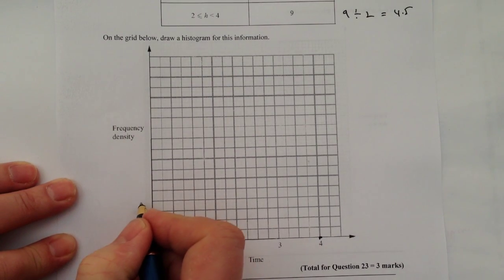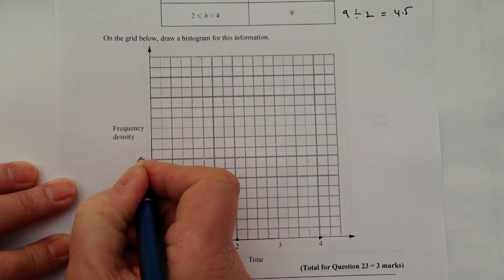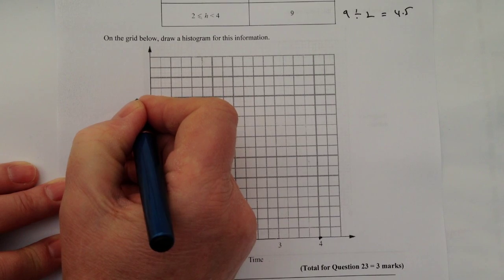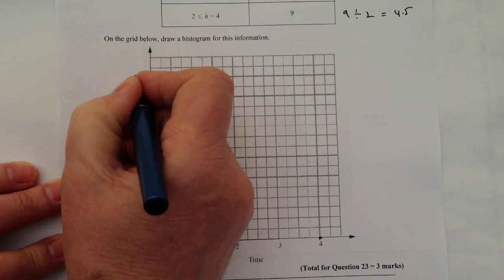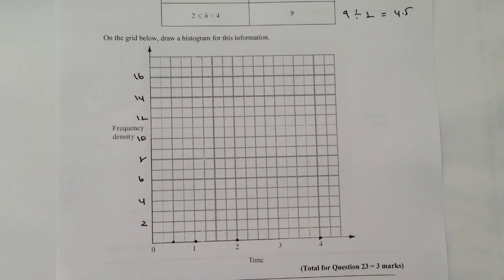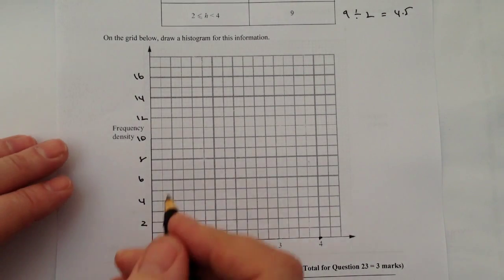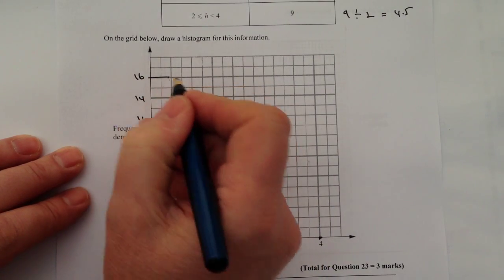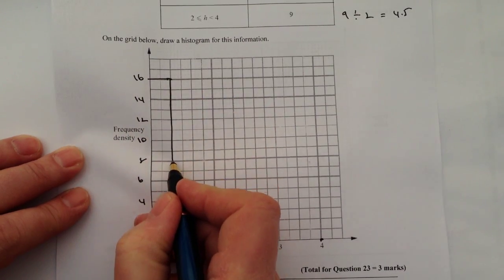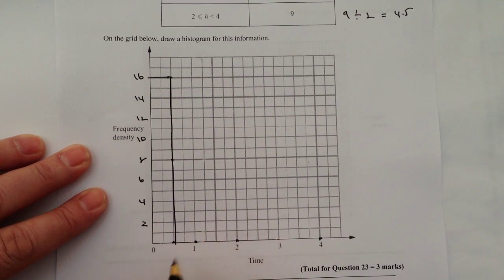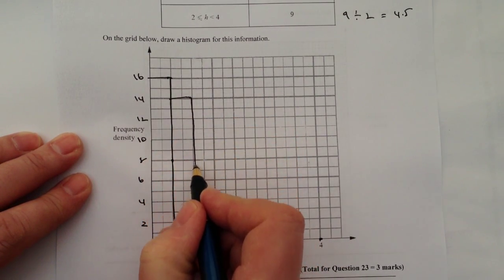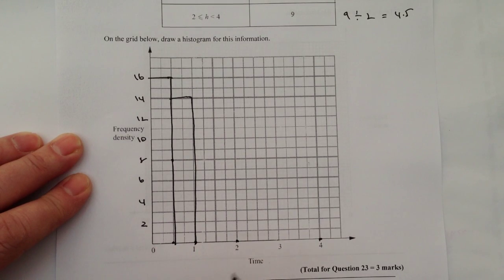One of the things about these is that generally speaking, they do make it relatively straightforward to be able to work out where you need the different frequency densities on the left hand side. They always leave the axis blank and it's entirely up to you to fill that out. It's a little bit rough and ready on this particular one just because I'm conscious of the time on the video.